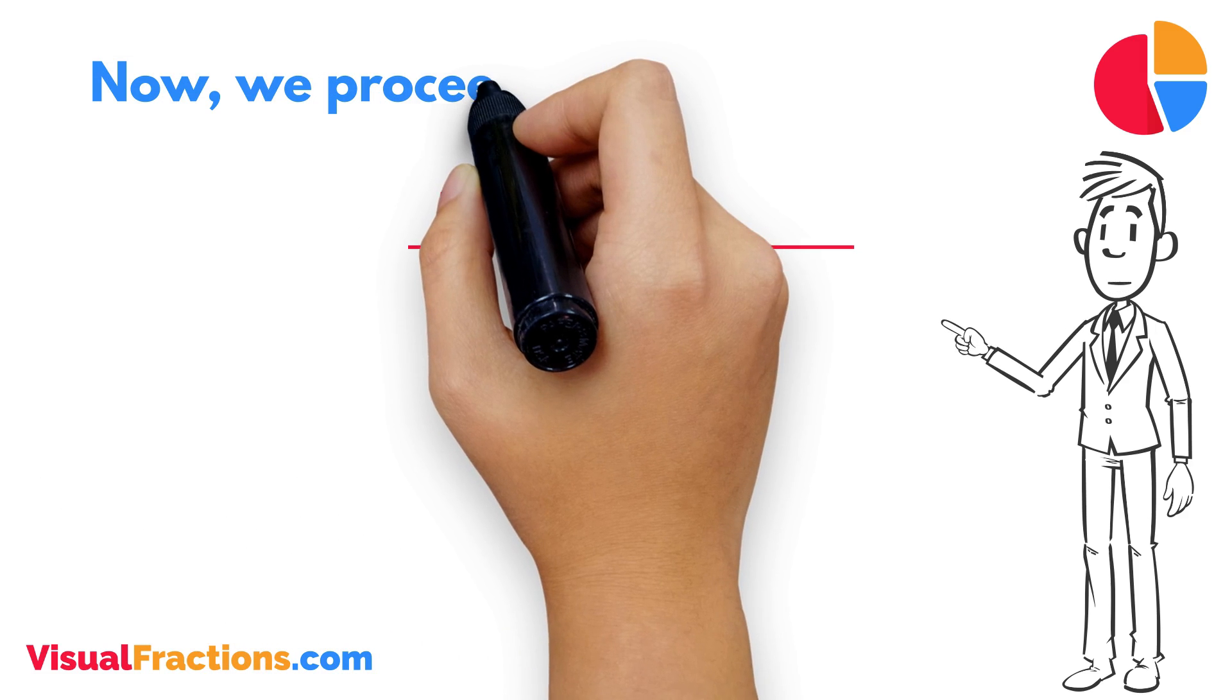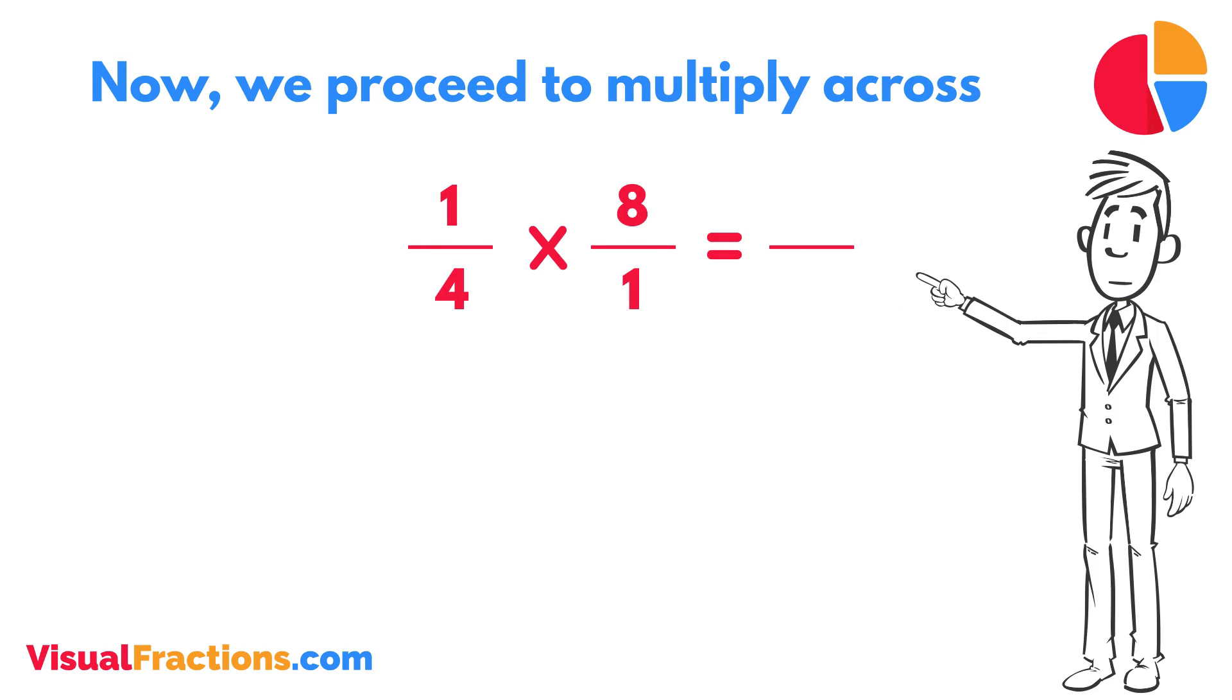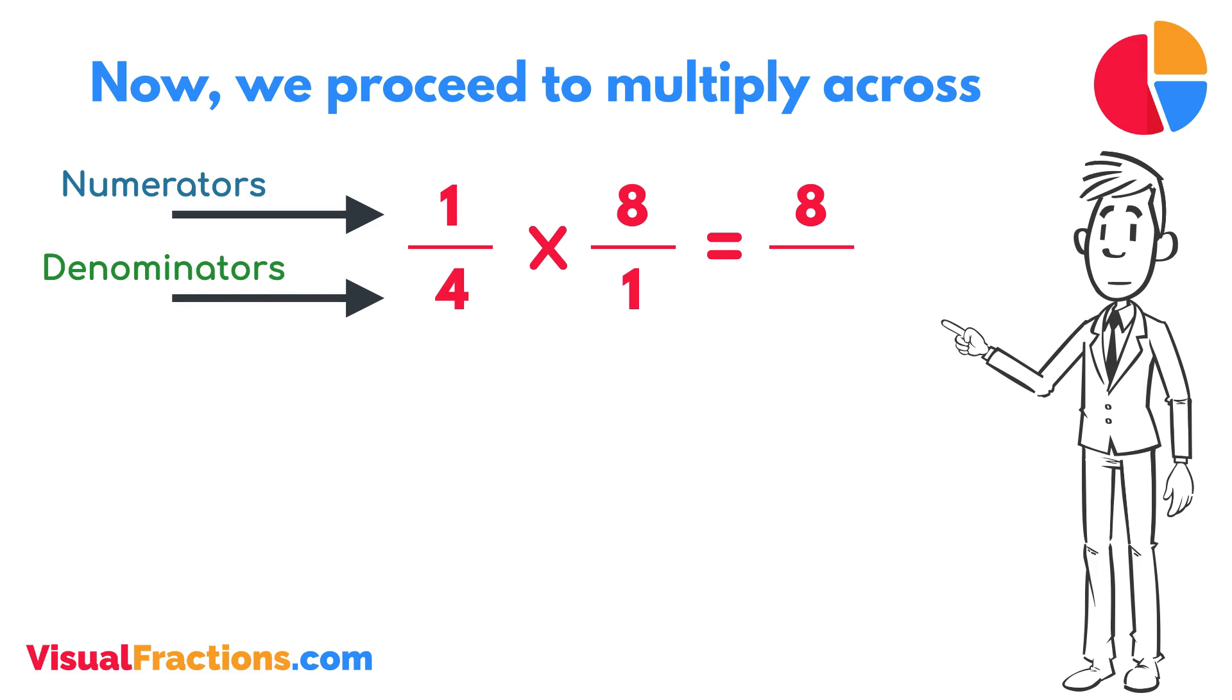Now, we proceed to multiply across. First, multiply the numerators, 1 times 8 equals 8. Next, multiply the denominators, 1 times 4 equals 4.